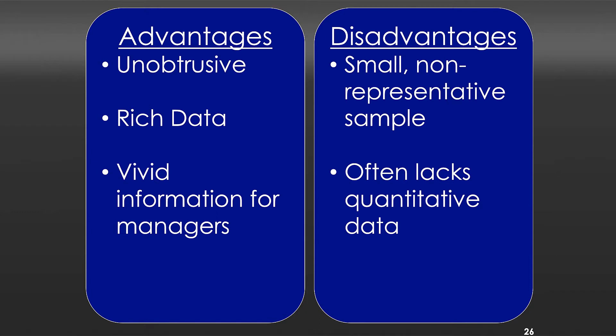The disadvantages of observational research are that you typically have small and non-representative samples. It's hard to go out and observe thousands or hundreds of thousands of people because it's expensive to do. So you end up with small samples, and they tend not to be representative of all populations, but rather hyper-localized to wherever you happen to observe them. If you're observing in one supermarket over another, maybe that supermarket is in an affluent or less affluent area — that doesn't really speak to people in general, but only to that small ecosystem. Be very careful of the conclusions you draw, because they might not generalize.